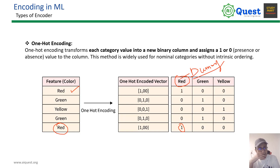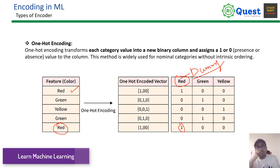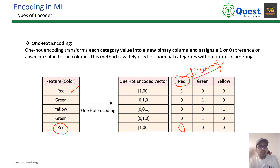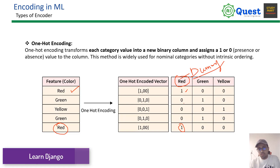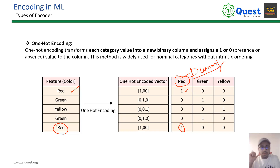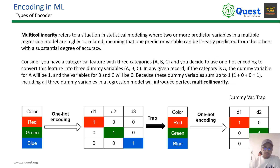This is a problem called multicollinearity. The problem is that the regression model columns are highly correlated. We can see this through Pearson correlation. When one column is 1, another column is ultimately 0. So when we have n dimensions, we only need n-1 dummy columns.